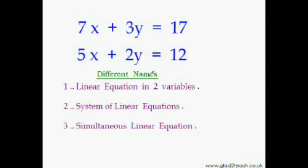Equations can be called by different names. The very popular name, as you know, is simultaneous linear equations. They are also called system of linear equations, and sometimes they are also called linear equations in two variables.